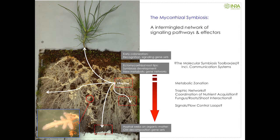As you know, mycorrhizal symbiosis is a very important process. For each meter of root, there is one kilometer of fungal hyphae — a striking extension of the root ecosystem. These fungi are playing a key role in the uptake of nutrients. But we are mostly interested in understanding the gene networks involved in both the development of the fungal compartments and the interaction with the plant — signaling pathways, effectors, early colonization of the root system, recognition and signaling between the two partners, how the symbiotic structures are evolving, and how the metabolism between the two partners is coordinated.